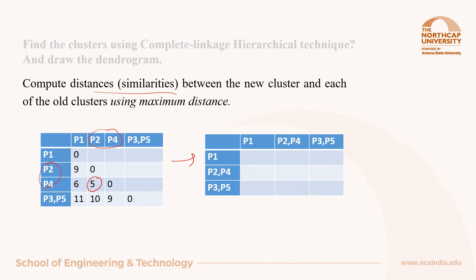For P1 it is 0. The new cluster P2P4 distance from P1 is maximum of 9 or 6, so 9 is here; from P2P4 it is 0. Next, distance of P3P5 from P1 is 11; from P2P4 is maximum of 10 or 9, so 10 will be here, and the diagonal entry is 0.